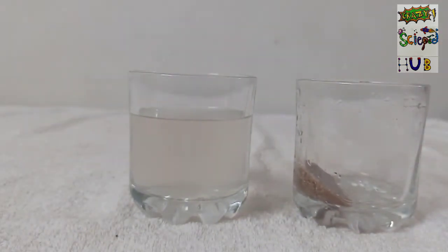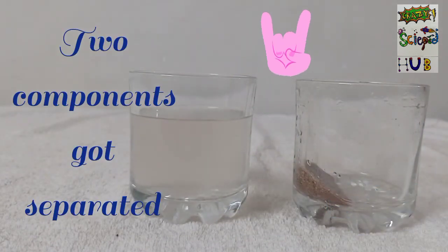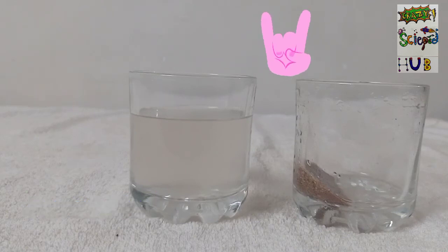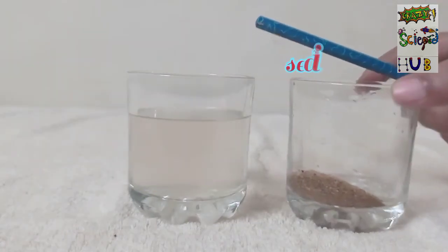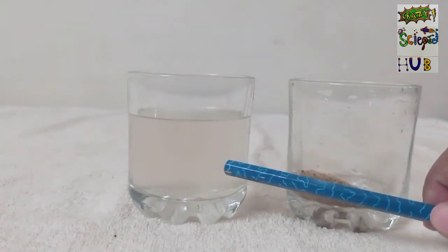Now we can observe the two components which got separated by the process called sedimentation and decantation. We got the sediments in one container and clear liquid in another container.